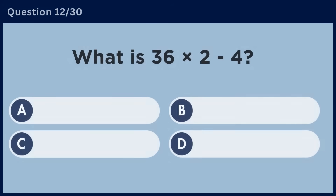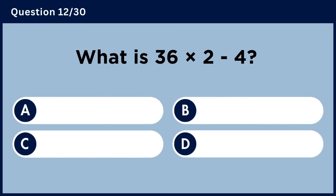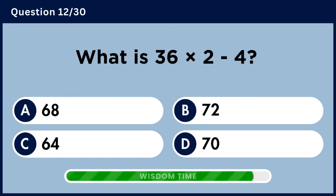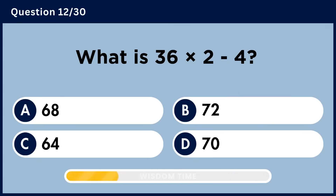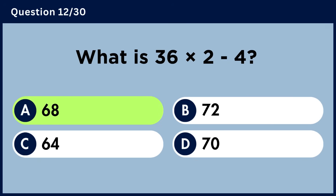What is 36 multiplied by 2 minus 4? Answer A: 68.